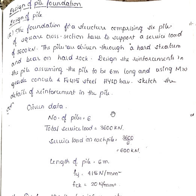Let us see the problem on design of pile foundation. The foundation for a structure comprising 6 piles of square cross section has to support a service load of 3600 kN. The piles are driven through a hard stratum and bear on hard rock. Design the reinforcement in the pile assuming the pile to be 6 m long and using M20 grade concrete and FE415 steel HYSD bars. Sketch the details of reinforcement in the pile.